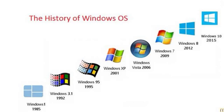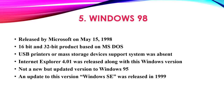Five: Windows 98. Released by Microsoft on 15th May 1998. 16-bit and 32-bit product based on MS-DOS. USB printers or mass storage device support was absent. Internet Explorer 4.01 was released along with this Windows version. Not a new but updated version to Windows 95. An update to this version, Windows SE, was released in 1999.